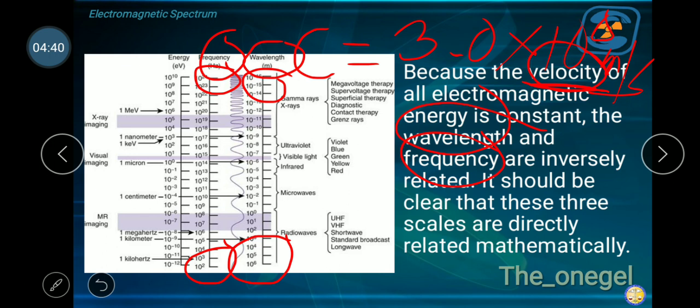For example, the frequency is at 10 raised to positive 23, and the wavelength is at 10 raised to negative 15. Here, the wavelength is low at 10 raised to positive 2, whereas the wavelength is at 10 raised to positive 6. They are inversely related, which means that it should be clear that these three scales are directly related mathematically. These three parameters are described mathematically using the sine wave equation. That is velocity equals frequency times the lambda.